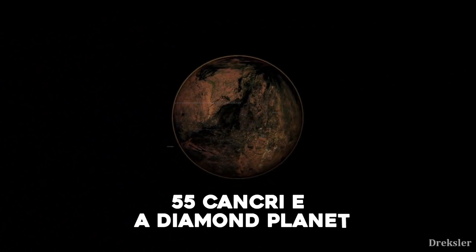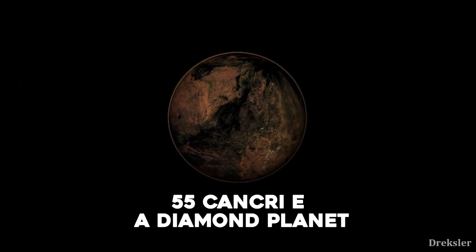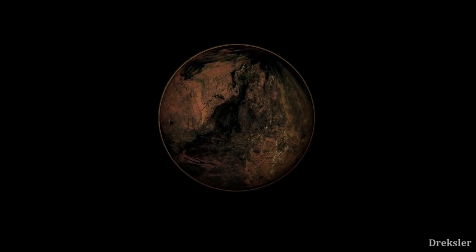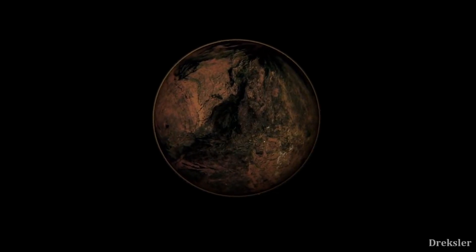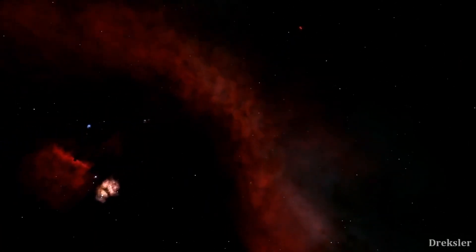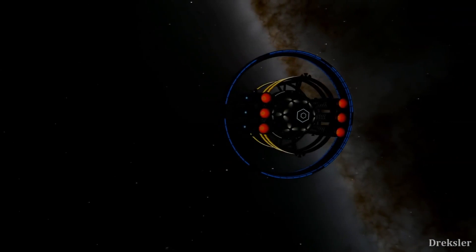55 Cancri E – A Diamond Planet. This exoplanet in orbit around sun-like host star 55 Cancri A may be a real gem. The first super-Earth discovered around a main-sequence star, it was thought to be so abundant in carbon.